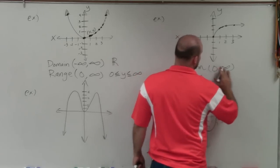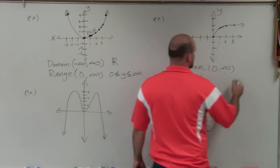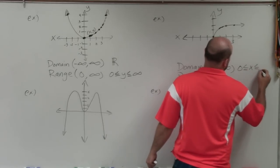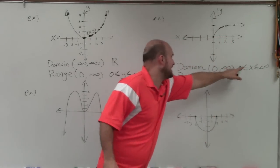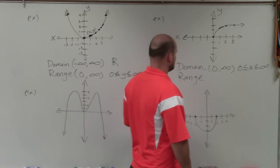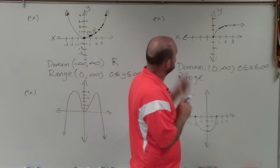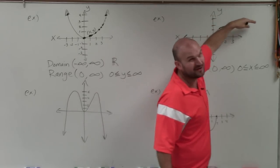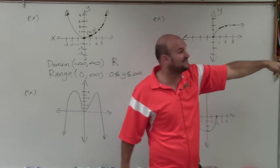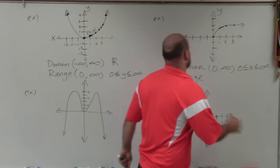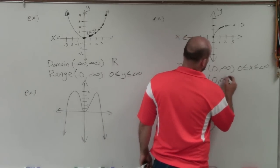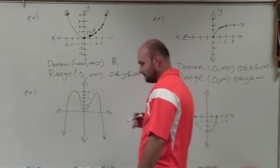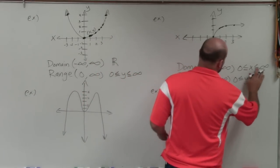For the domain in interval notation: 0 to infinity with a bracket at 0. In inequality: 0 is less than or equal to x, which is less than or equal to infinity. Notice domain uses x, range uses y. For the range, I'm not going to any negative numbers but I am going up. Even though this graph increases very slowly, it is still increasing. So my range is going to be from 0 to infinity as well, or 0 is less than or equal to y — though it can't actually equal infinity.